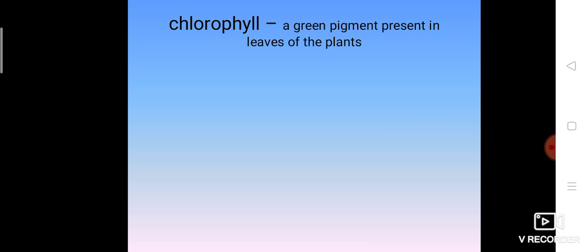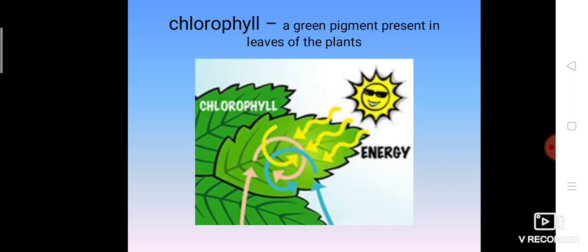The next word we are going to see is chlorophyll. Chlorophyll means a green pigment present in the leaves of the plants. This chlorophyll gives the green color.